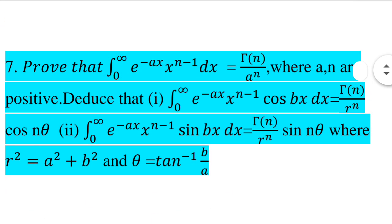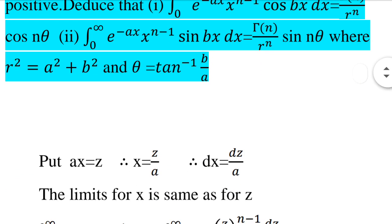To prove the first result: integral from 0 to infinity of e raised to minus ax times x raised to n minus 1 dx. We substitute x equal to z by a, so dx equals dz by a.